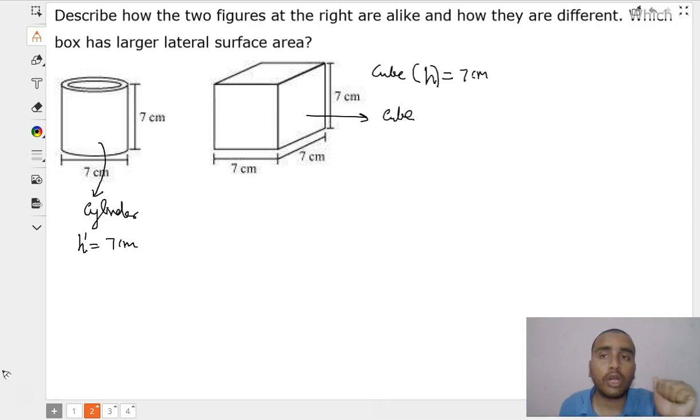So which box has the lateral surface area or the larger lateral surface area? So, we can find the lateral surface area that is LSA. LSA stands for the lateral surface area. Let us say first of all, find it for cylinder. So for cylinder, we can see lateral surface area, the formula is 2 pi RH.